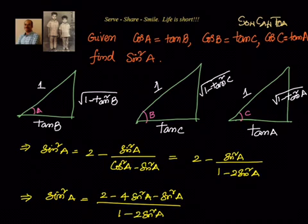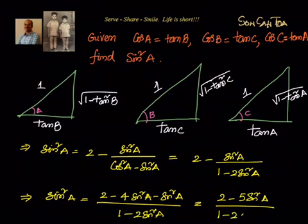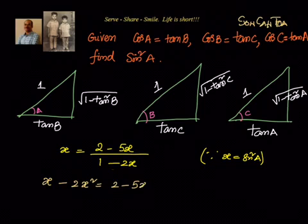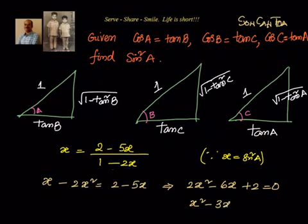That equals (2 minus 5sin²A) divided by (1 minus 2sin²A). Now let x equal sin²A. This becomes x equals (2 minus 5x) divided by (1 minus 2x). Cross-multiplying: x minus 2x² equals 2 minus 5x, which gives 2x² minus 6x plus 2 equals 0, or x² minus 3x plus 1 equals 0. We now have a quadratic equation to find x, which is sin²A.